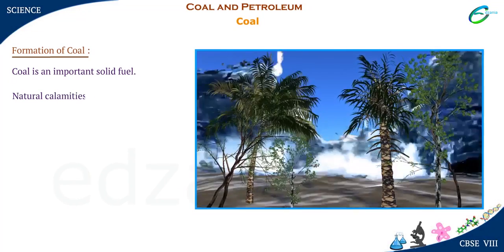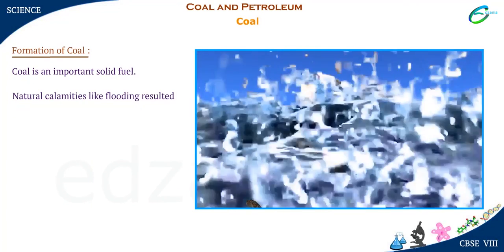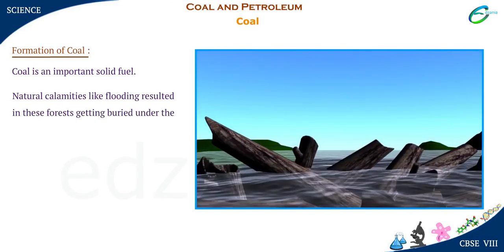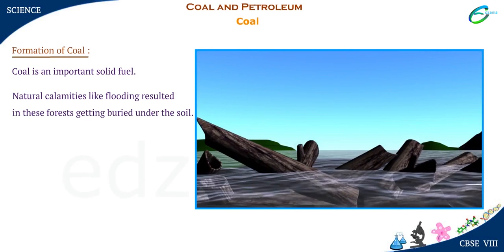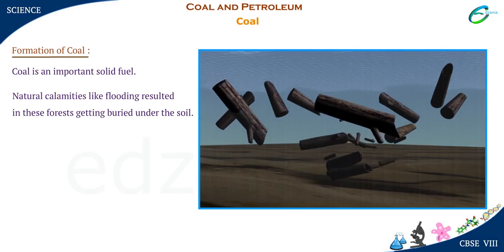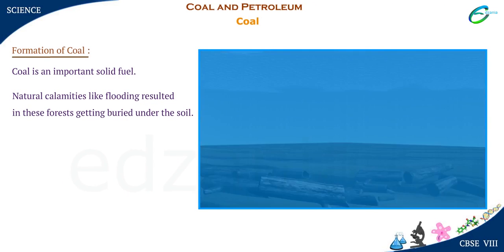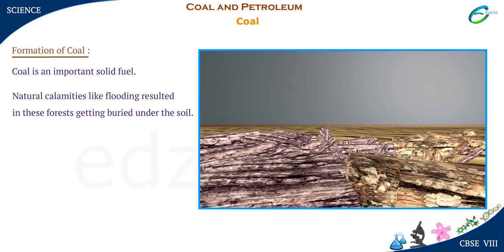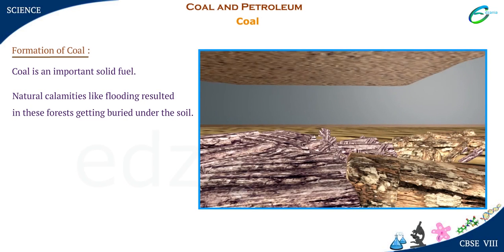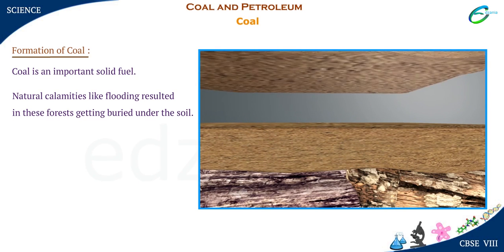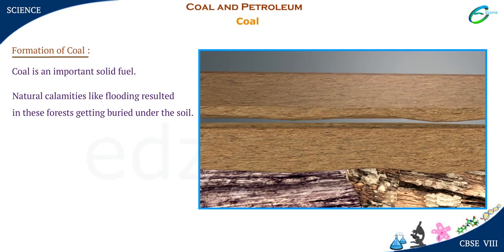Natural calamities like flooding resulted in these forests getting buried under the soil. They were compressed as more and more layers of soil got deposited over them. As they sank deeper and deeper, the temperature also rose.